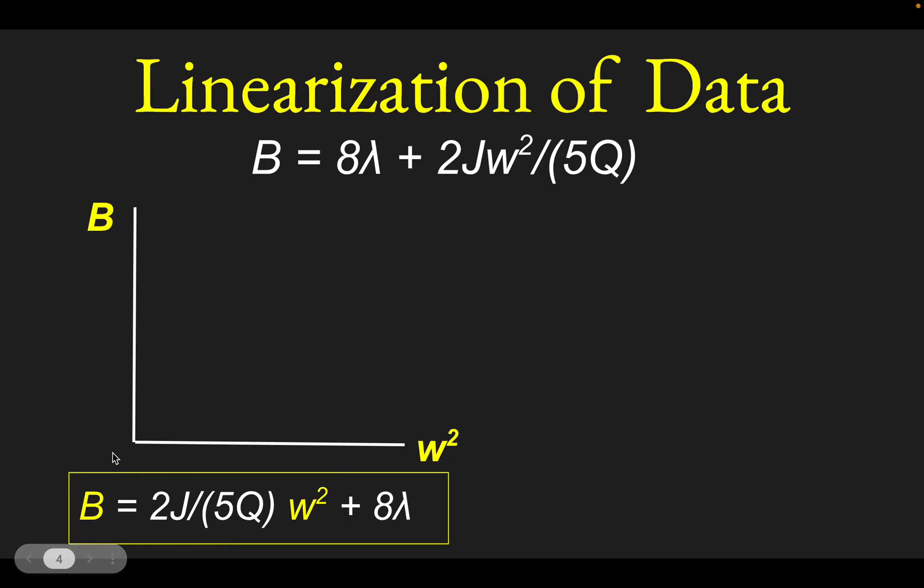So kind of solve it for b, but rearrange these terms so that the term with the x variable in it sort of comes first. So it looks like mx plus b. Well, the coefficient of your x variable would be 2j over 5q, so that would end up being the slope of the line that you would get. So you would get a line, and the slope of that line would be 2j over 5q. And you could see in this case we would have a plus b or a y-intercept of 8 lambda.